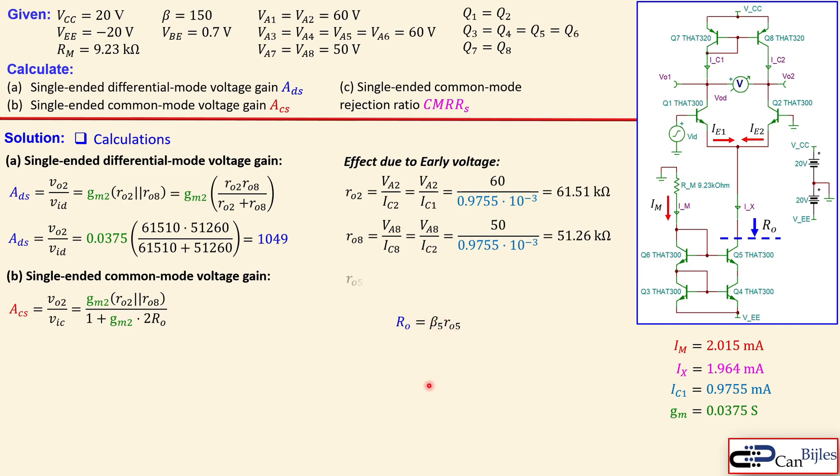For the cascode there is then the beta 5 times the RO5. So again the RO here. Beta is 150. But RO5 is again due to the early voltage. So we can do the early voltage over the collector current of the Q5. But the collector current of Q5 is just IX. So we know IX. So that will be then 60 over this 1.964 milliamps. You get now 30.55 kilo ohms. So that is known. So we can then do 150 times this. And you will get now 4.582 mega ohms.